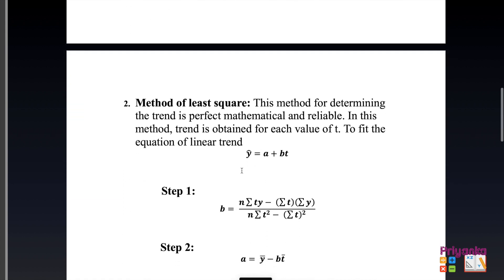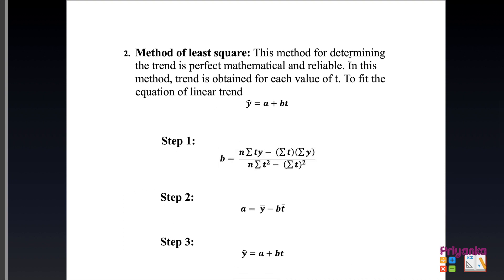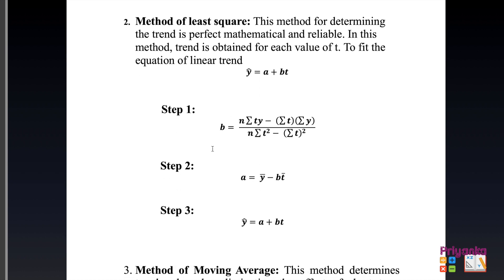The second method is the least square method. This method for determining trend is a perfect mathematical and reliable one. In this method, trend is obtained for each value of T by fitting the equation of linear trend: Y-cap equals A plus BT. The formula for B is very similar to what we used in the last chapter — the only difference is that instead of X, we write T. We find A in the second step, and the third step gives us Y-cap equals A plus BT.